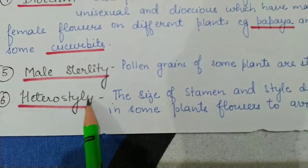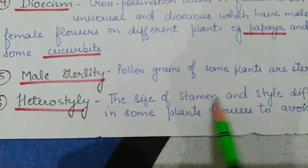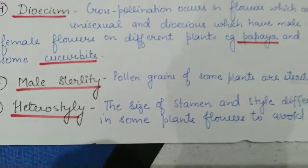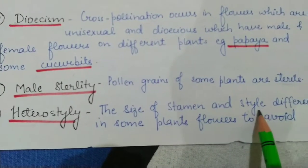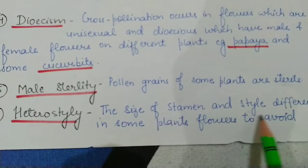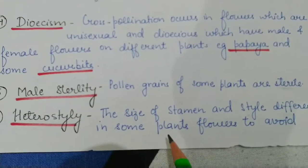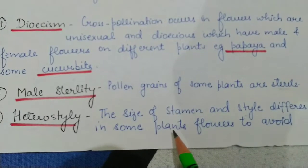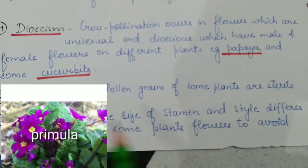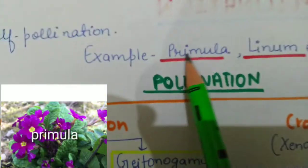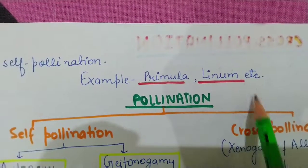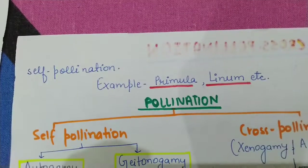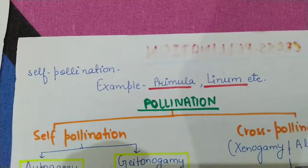The sixth character is heterostyly. In heterostyly, the size of the stamen — the male reproductive part — and the style — the female part — differ from each other. One is small and one is large, and vice versa. Because of this size difference, self-pollination cannot occur. Examples are Primula and Linum.